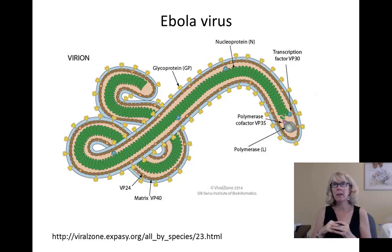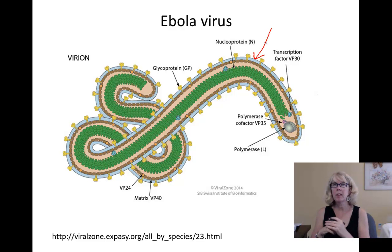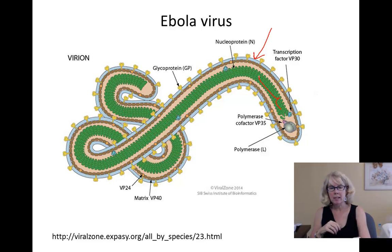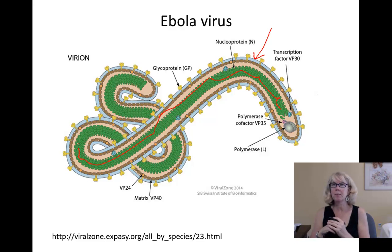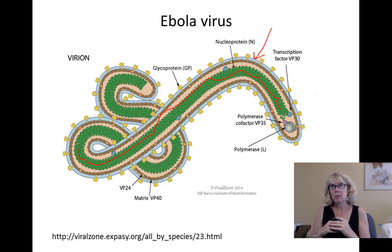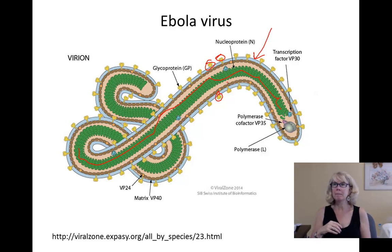The Ebola virus is part of the group of viruses called Filoviridae. It contains a viral envelope and its nucleic acid is a negative single-strand RNA, which is wrapped inside its capsid as shown here. There are an array of glycoproteins along the surface of the membrane, and we'll be talking about those quite a bit.